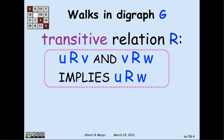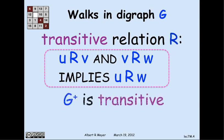A relation r on a set — where the domain and codomain of r are the same — is transitive if u r v and v r w implies u r w. A relation that has that property is said to be transitive. The positive path relation of any graph g is transitive.